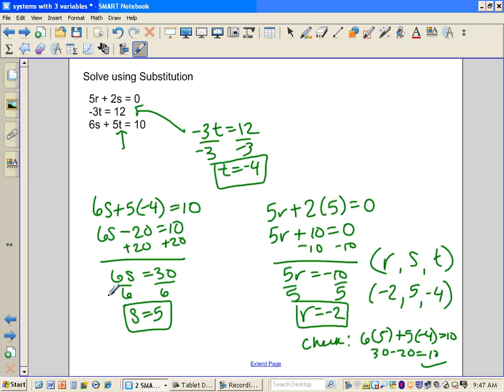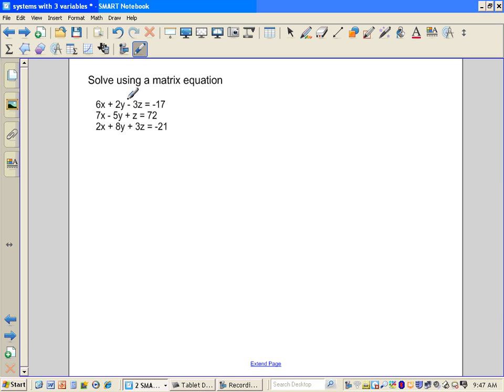If you look at the next example, again, three much more complicated equations because each equation has all three variables in it, but notice this is still set up in standard form, and if equations are in standard form, then you can use a matrix equation, and you're going to set it up the same way as you would if you just had two equations, except you're going to have a 3 by 3 for your matrix A.